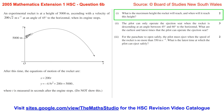Question 6b. An experimental rocket is at a height of 5000 metres, ascending with a velocity of 200 times the square root of 2 metres per second at an angle of 45 degrees to the horizontal when its engine stops. After this time, the equations of motion of the rocket are x equals 200t and y equals negative 4.9t squared plus 200t plus 5000, where t is measured in seconds after the engine stops.